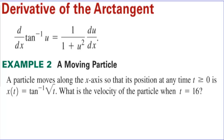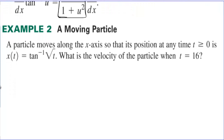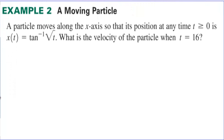Derivative of the arctangent. The derivative of arctangent is 1 over 1 plus u squared, and then times the derivative of the inside if the inside happens to be a function other than just x or t.